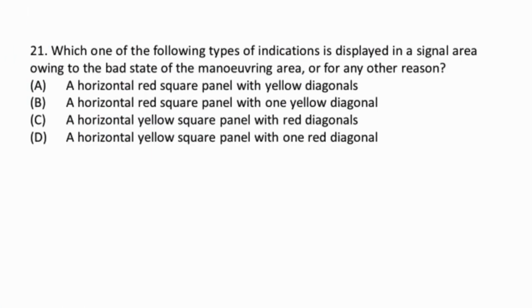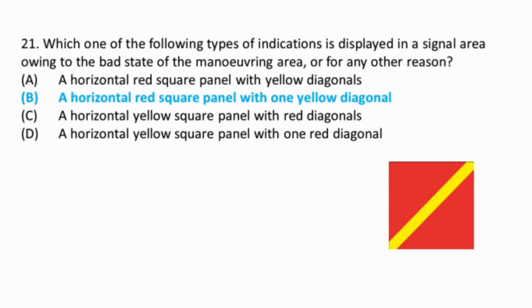Question 21: This is based on visual ground signals. A horizontal red square panel with one yellow diagonal when displayed in a signal area indicates that owing to the bad state of the maneuvering area, or for any other reason, special precautions must be observed in approaching to land or in landing.